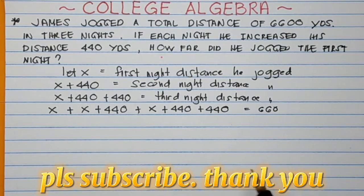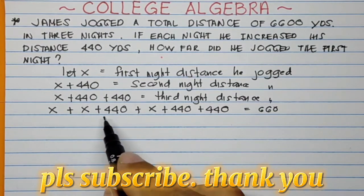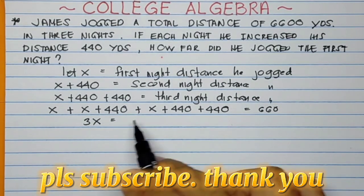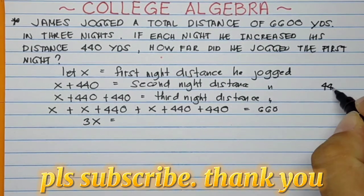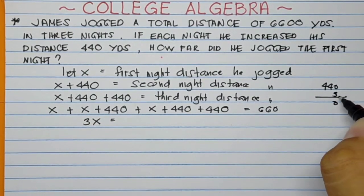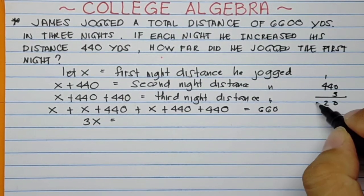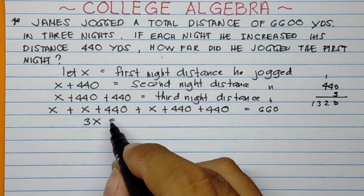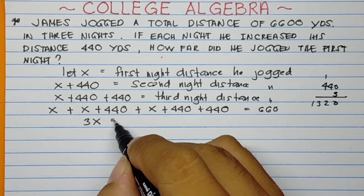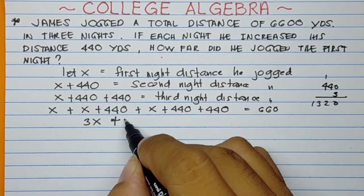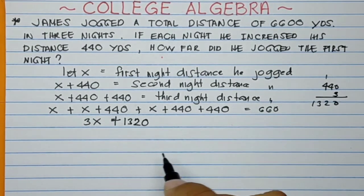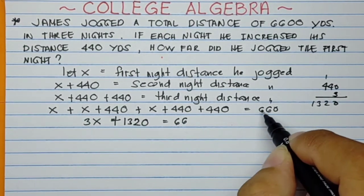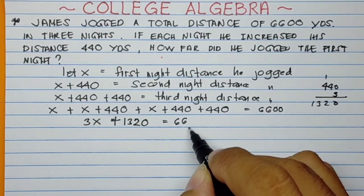So now, we derive the value of X here. X plus X plus X, that will be 3X. And 440 times 3. 3 times 0, 3 times 4 is 12, 3 times 4 is 12. That is plus 1,320 equals 6,600.